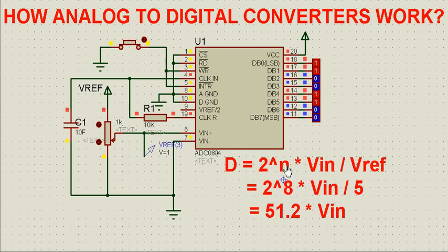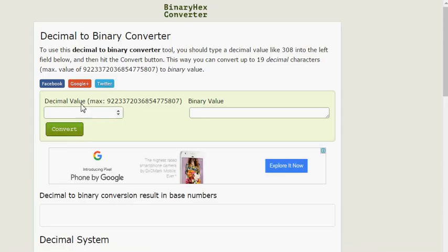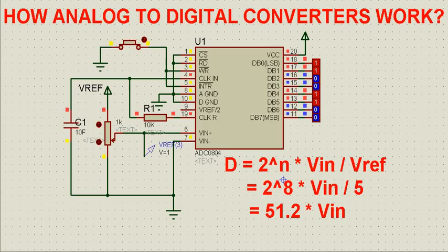If we substitute the values of N and Vref, we get D equal to 51.2 times the input voltage. So when the analog voltage is one volt, D will be 51.2 times 1, which is 51.2. Converting this decimal value into binary gives us 0 0 1 1 0 0 1 1 — and our simulation gave us the same result.